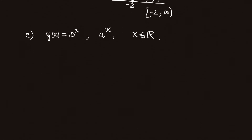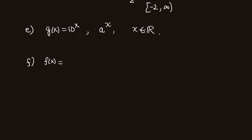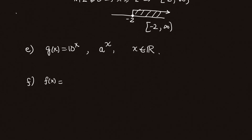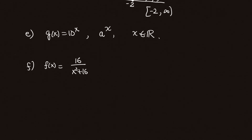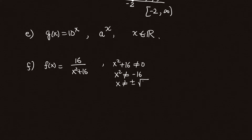Then we have Part F with f(x) equal to a fraction with x² + 16 in the denominator. Like Part C, it is continuous on any number except those that bring the denominator to 0. Since x² + 16 cannot equal 0, x² cannot equal −16, and the square root of a negative number does not exist. So for any x we will never get 0 in the denominator, meaning f is continuous on (−∞, ∞).